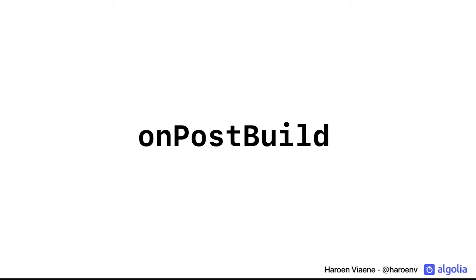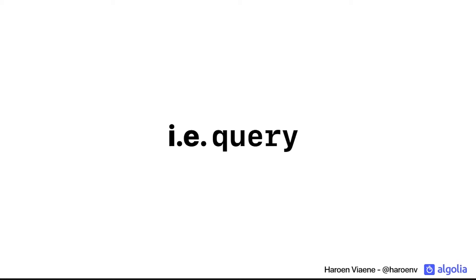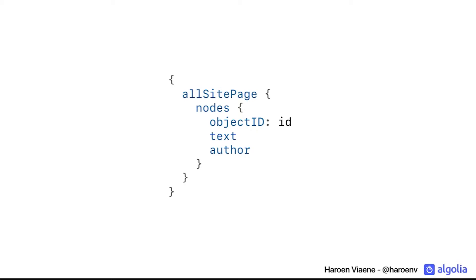But that's not the API we'll use, because we want to read from those nodes to make a search index. We'll use another API called OnPostBuild — after all those nodes have been made, we query from them. An example query — and this is what you give as configuration in the Algolia plugin — is something like: get all the pages on the website, get all their nodes, get a specific ID, the text of that node, and the author. This is just an example; it could be anything you want.